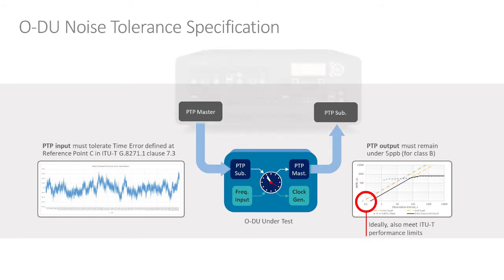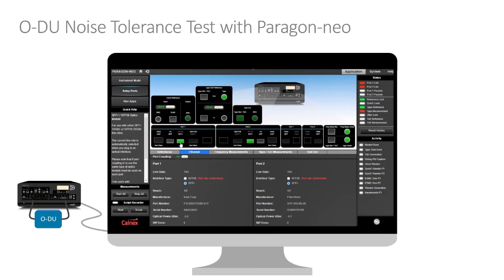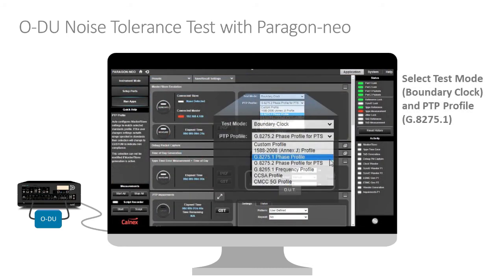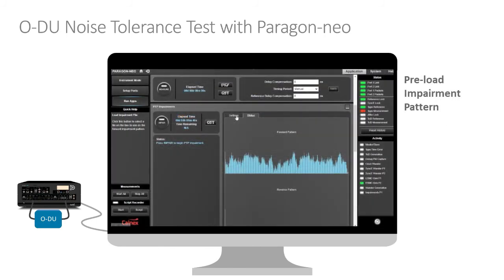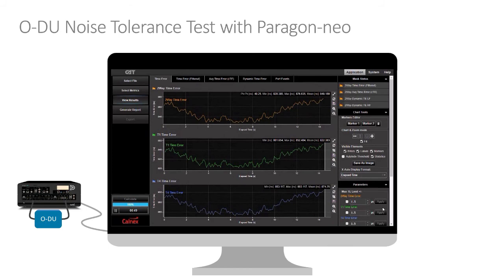Testing that timing performance with an ODU — Paragon Neo here, emulating the PTP master to sub-nanosecond accuracy, making a timing measurement on the subordinate side, again to sub-nanosecond accuracy, producing the required metrics and measurements, testing the limits — all of this while applying that defined time error noise pattern on the input to the ODU which is being tested. Here you can see selecting the desired interfaces to be tested, mixed rates being a clear requirement for an ODU and its position in the network. Here you take control of the PTP clock emulation function, set up an ITU-T compliant profile, select that specific noise pattern, start the measurements, take a look at those real-time metrics, and ultimately get the pass result from the ODU under test.